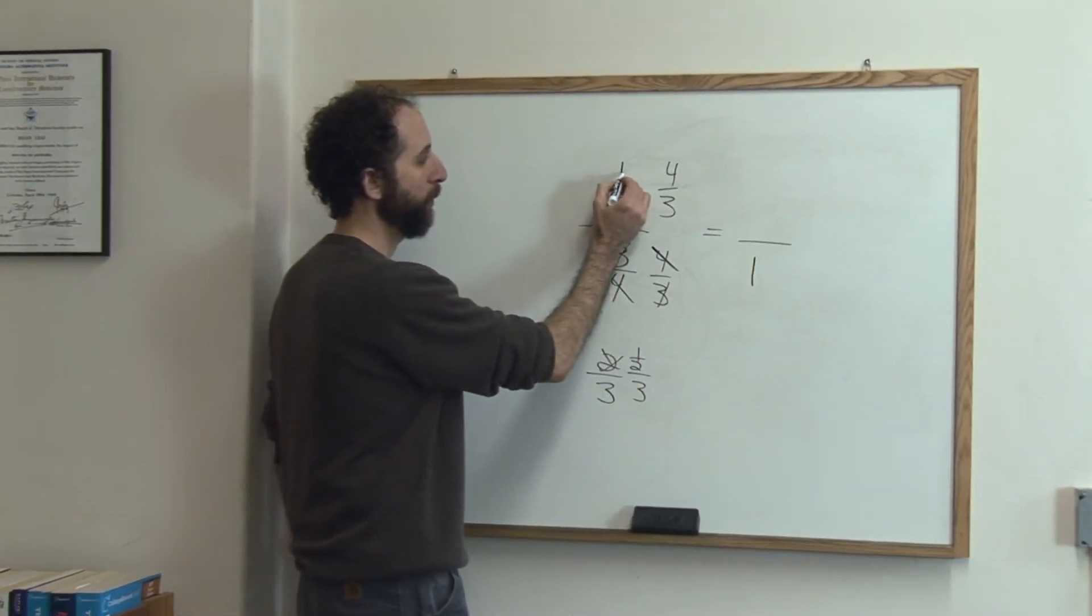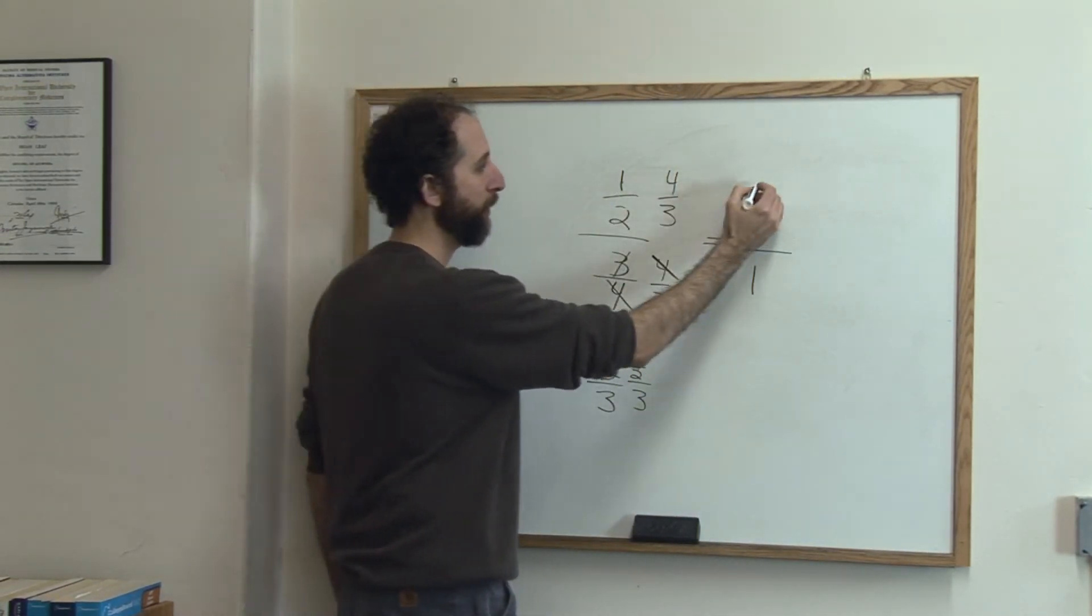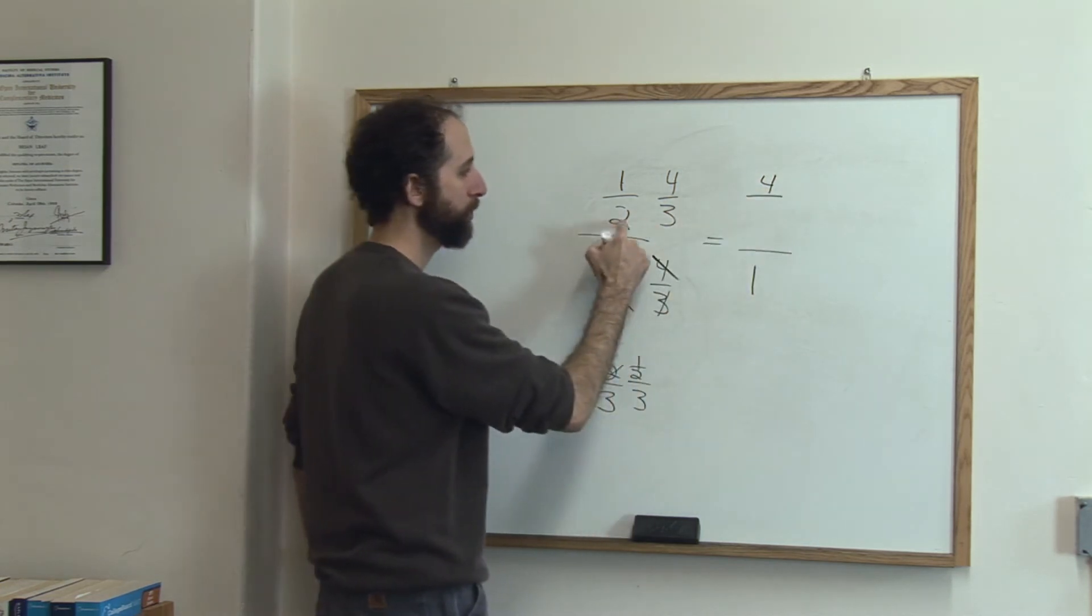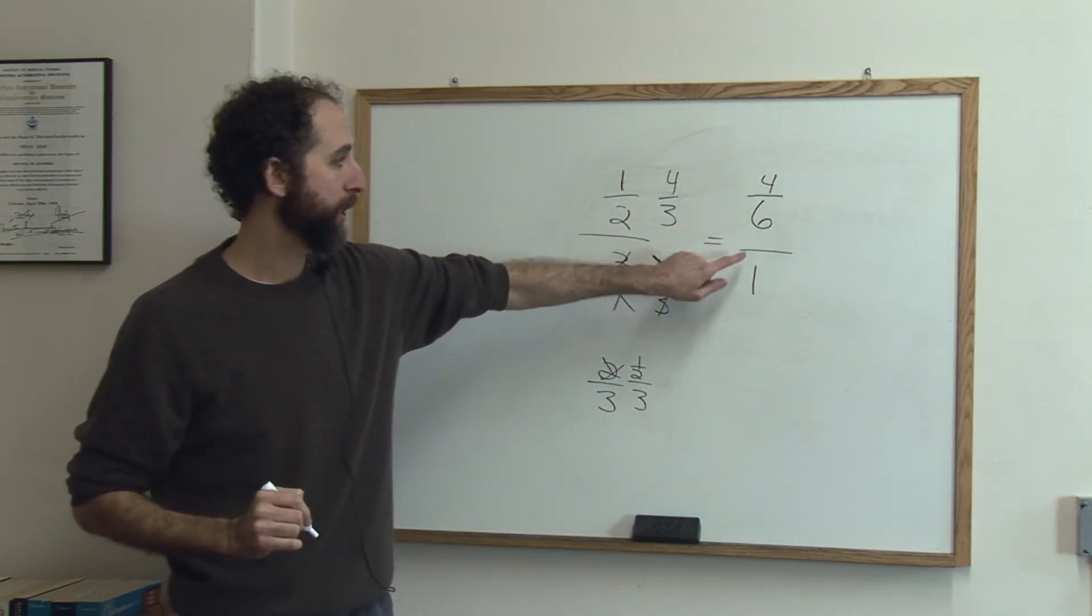On the top, we get 1 times 4, we could actually cross-cancel here, but we won't in this case. 1 times 4 is 4, 2 times 3 is 6.